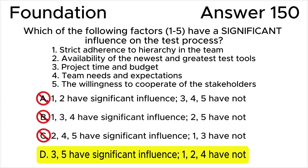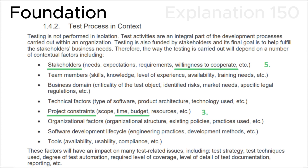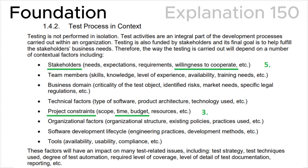The correct answer is D — three and five have significant influence, one, two and four have not. For the explanation, let's look at section 1.4.2, test process in context, in the ISTQB syllabus.